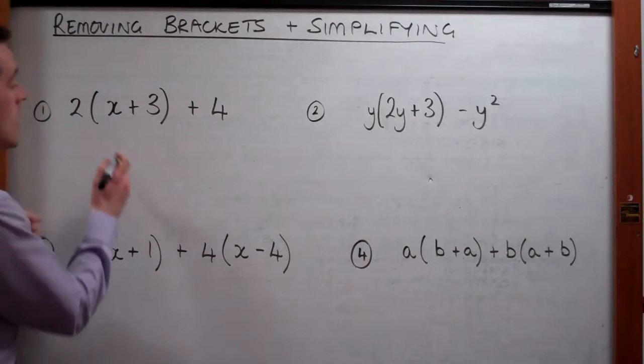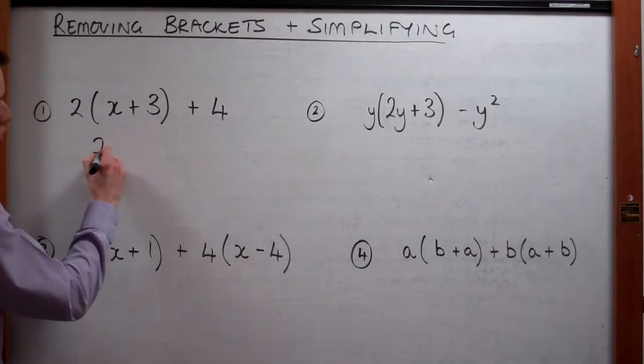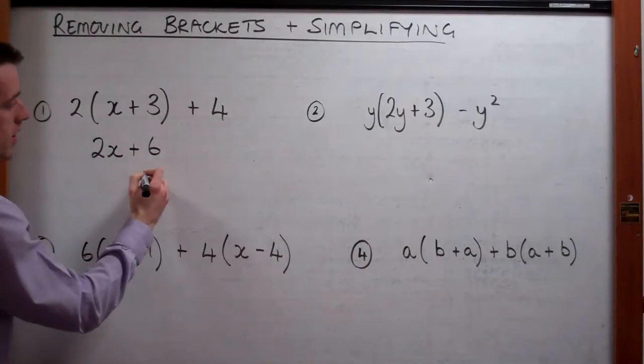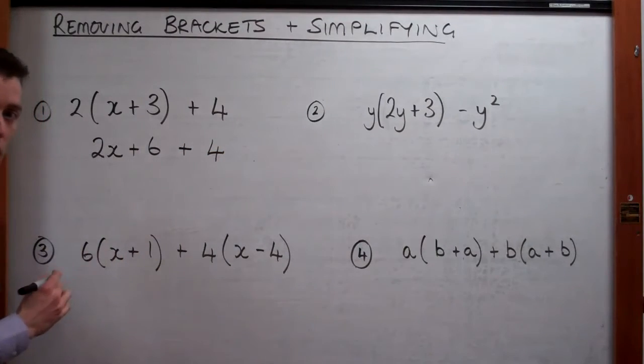So first thing we do here is we have to take the bracket off. So we do 2 times x is 2x. 2 times 3 gives us a 6. And then we've got this plus 4 that's at the end here and we just write that down like that.